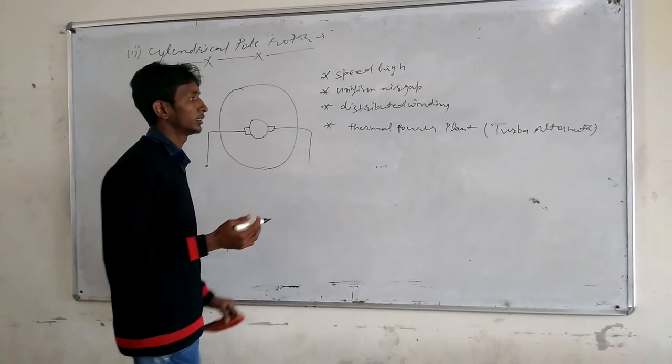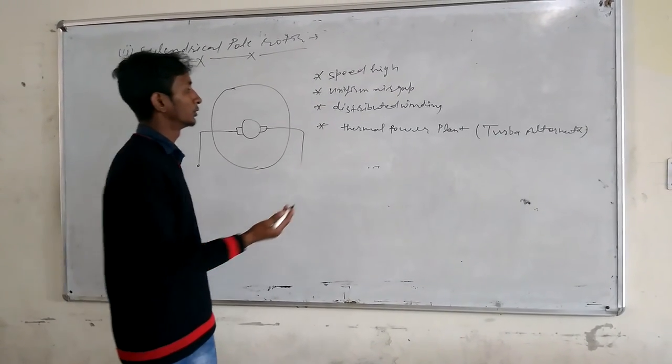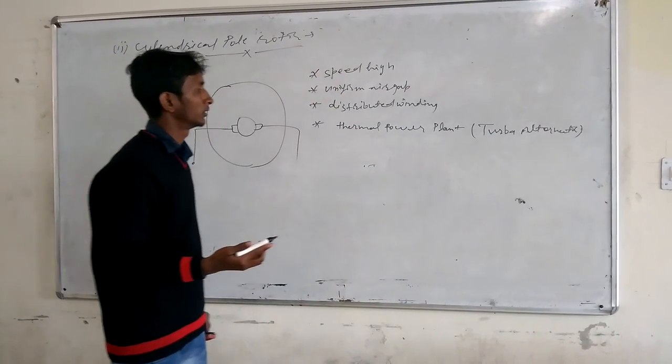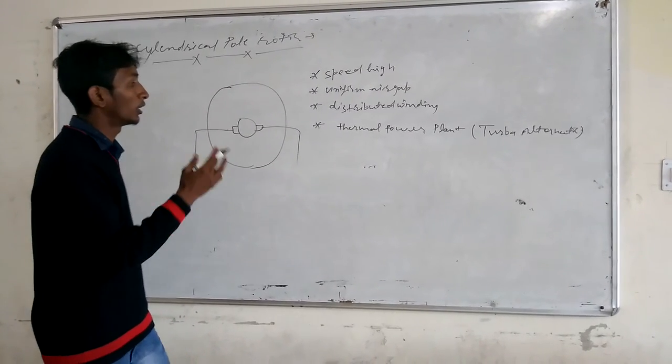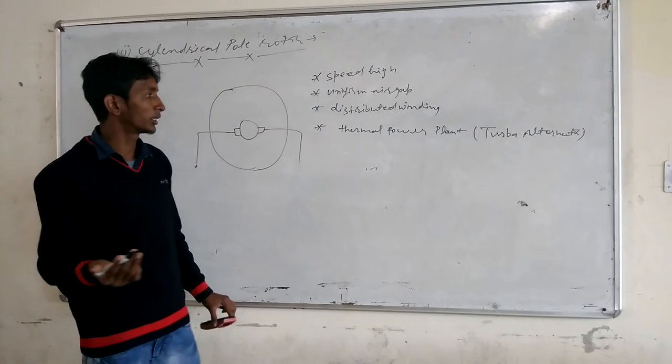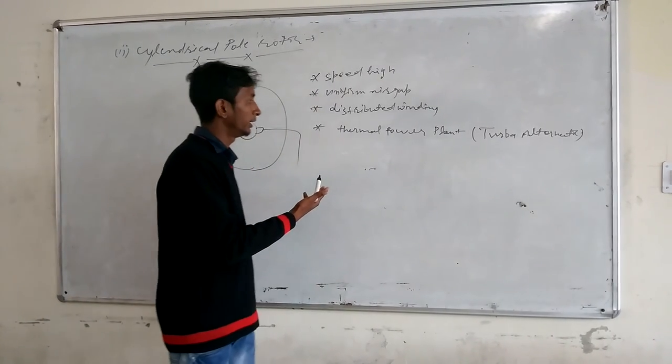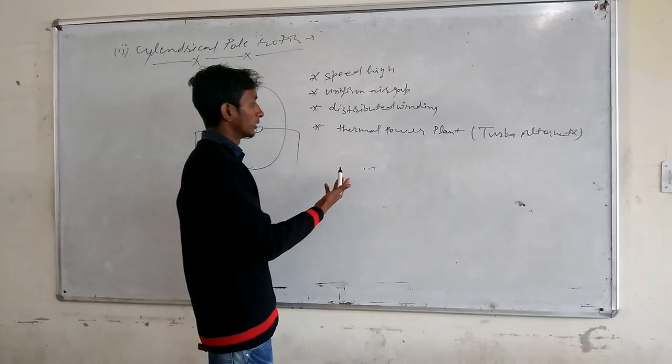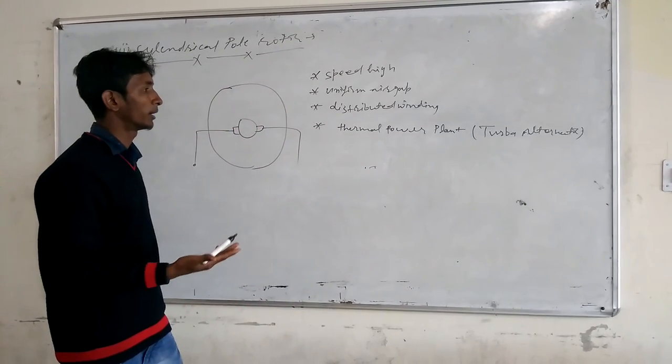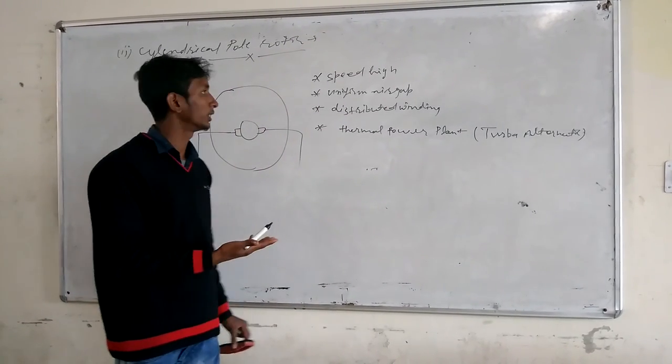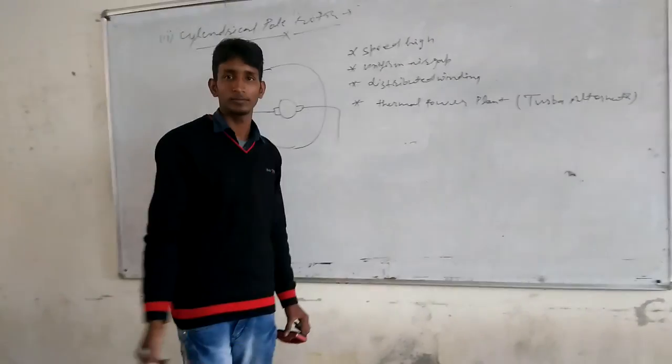Distributed winding is used in thermal power plant and concentrated winding is used in hydro power plant. Because in thermal power plant, speed is higher, and in hydro power plant, speed is low. That's all. Thank you.